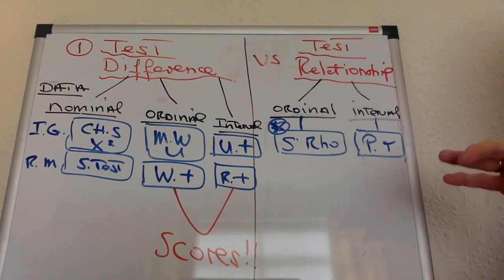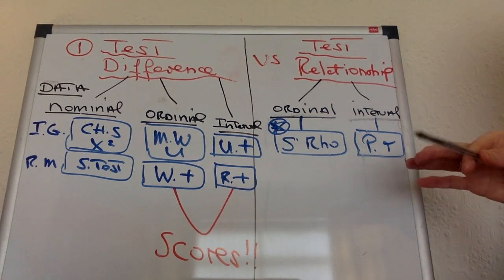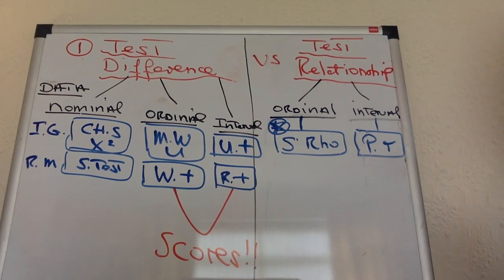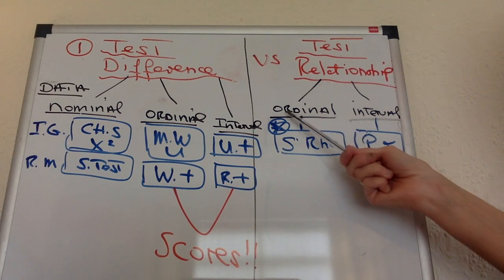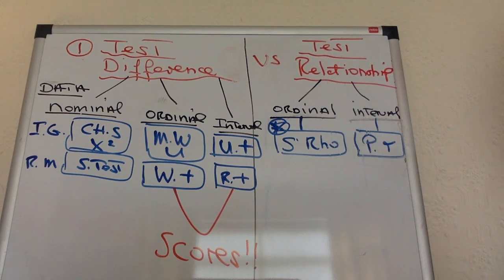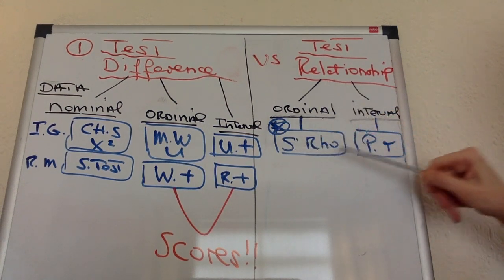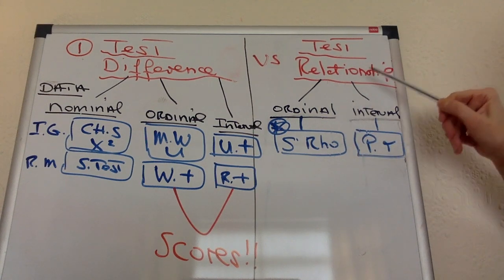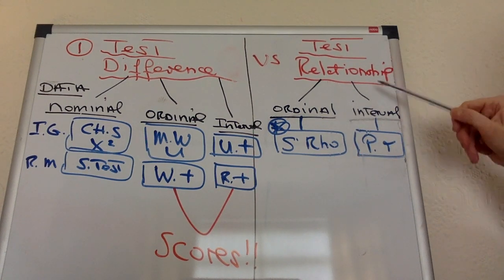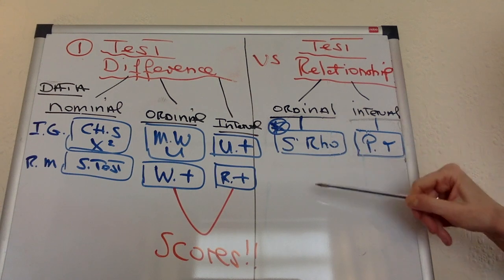So they may say researchers wanted to look into a relationship between amount of coffee drunk and color of hair or exam scores. Now, if you've got a test of relationship, it's so easy. You are going to have ordinal data. It can't be anything else. And you may have interval data, but here's the trick: you only ever need to worry about the ordinal data. If you've got the relationship scenario, then you've got a Spearman's Rho test.